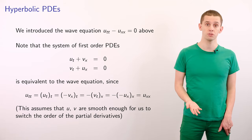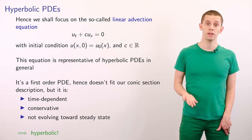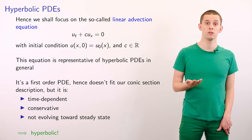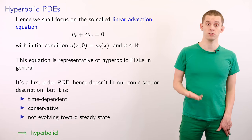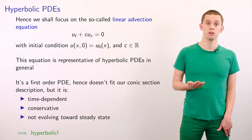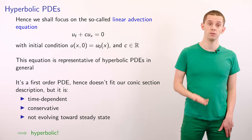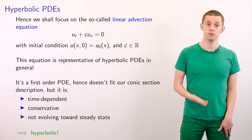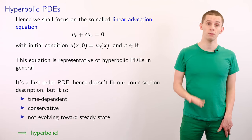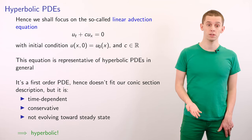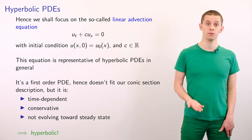Since we're able to make this simplification, it motivates us to look at a simpler equation to begin with: the linear advection equation, where we have that ut plus c*ux is equal to zero. Here we could make use of the initial condition that u(x, 0) is equal to u₀(x), and c here is a real constant. This equation is representative of hyperbolic PDEs in general, and it's a first-order PDE. It is time-dependent, also conservative, and not evolving toward a steady state, and therefore it fits within our typical characteristics of a hyperbolic equation.